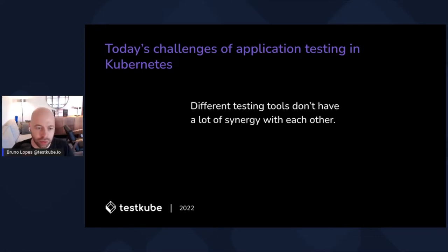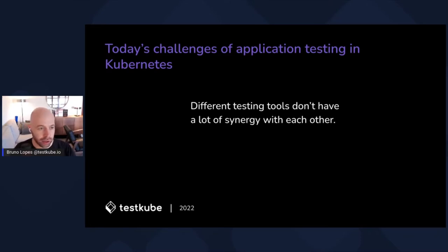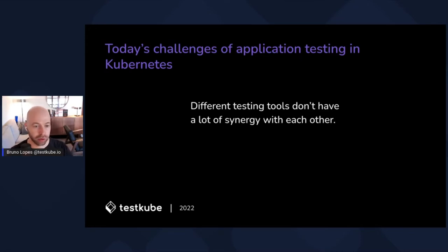Another challenge is synergy. If you are serious about testing and you do load testing, UI testing, API testing, and really care about quality, you'll use different tools for that — and there's not a lot of synergy between them. Each one, if it runs in Kubernetes, requires its own Docker image with all dependencies, different configuration files, different scripts, different pipeline steps. Most of them report results in different ways, because everyone has their own opinion on how to do it.